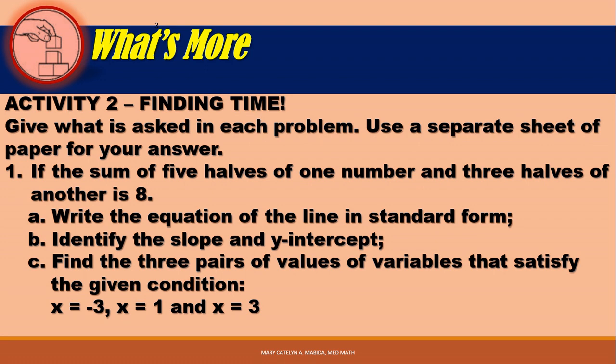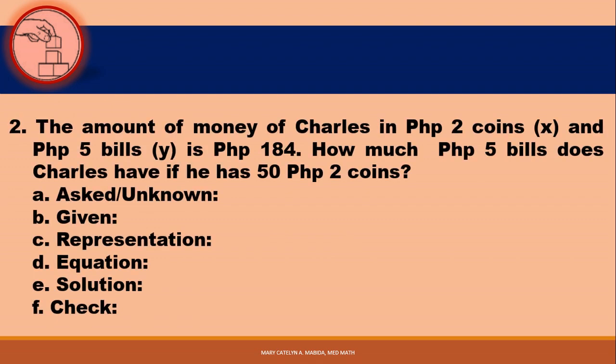Now here's what's more. Activity 2, Finding Time: give what is asked in each problem on a separate sheet of paper. Problem 1: if the sum of 5 halves of one number and 3 halves of another is 8, write the equation in standard form, identify the slope and y-intercepts, and find the three pairs of values where X equals negative 3, 1, and 3. Problem 2: the amount of money Charles has in 2-peso coins X and 5-peso bills Y is 184 pesos. How many 5-peso bills does Charles have if he has 52 two-peso coins? Remember to note the unknown, the given, the representation, equation, solution, and checking.